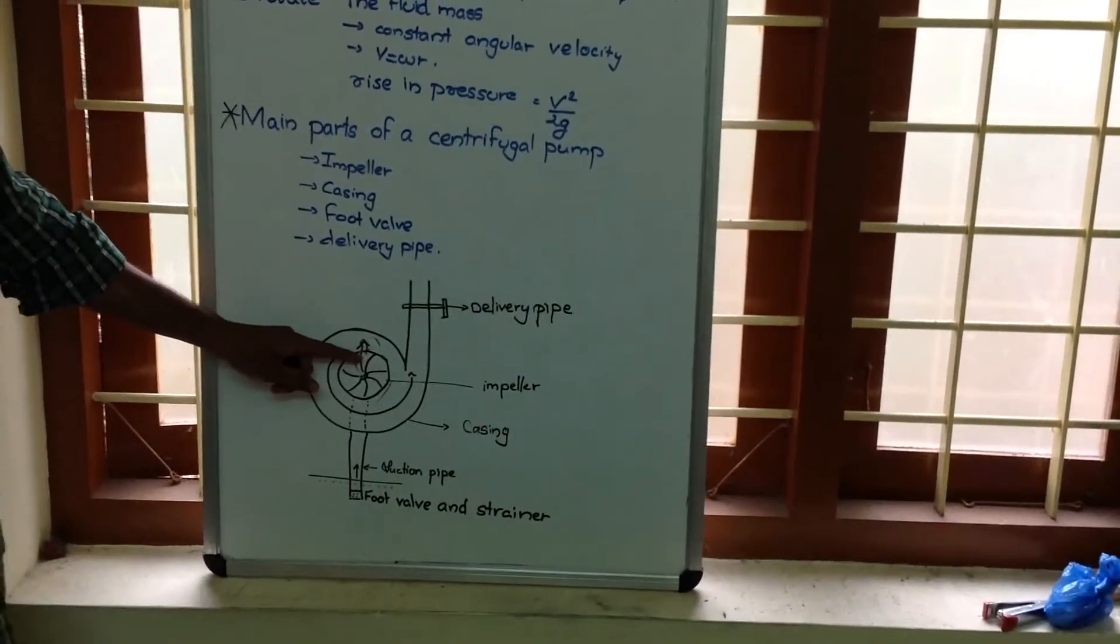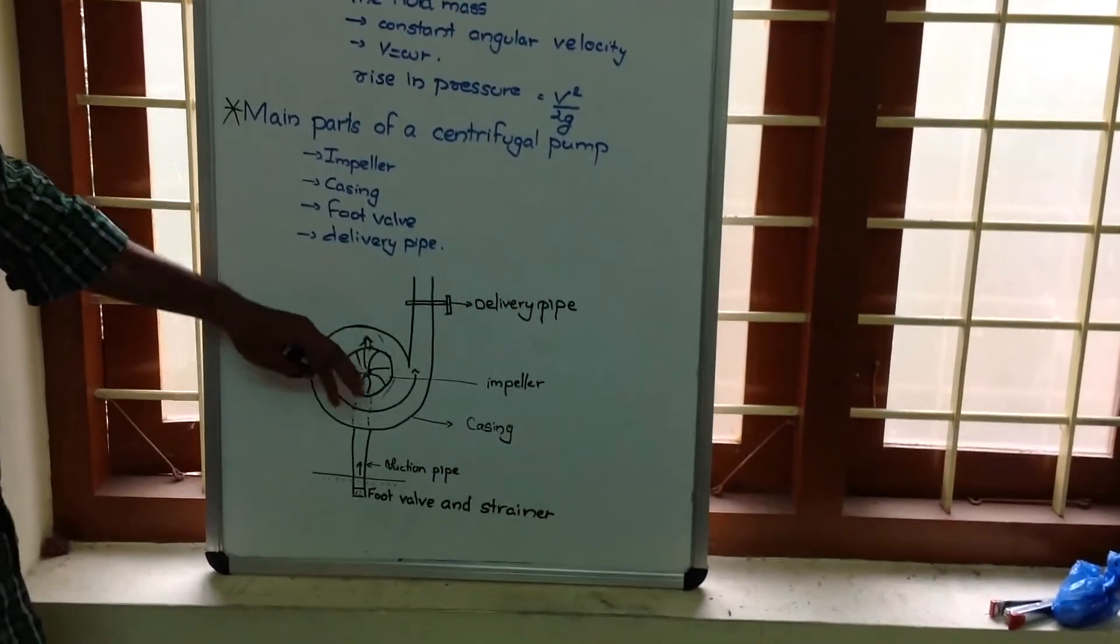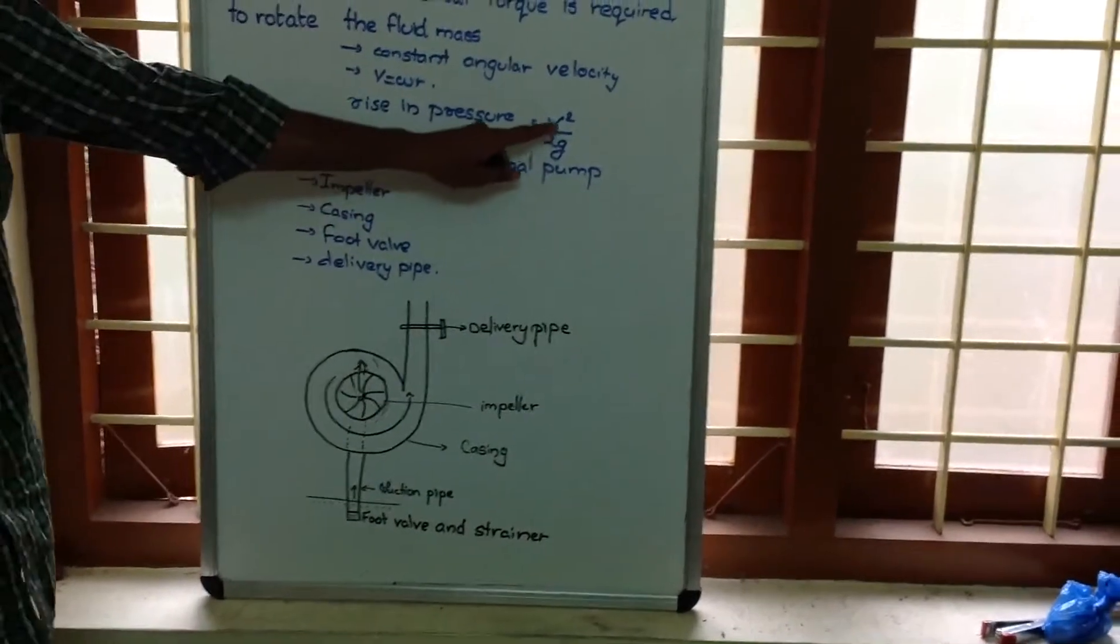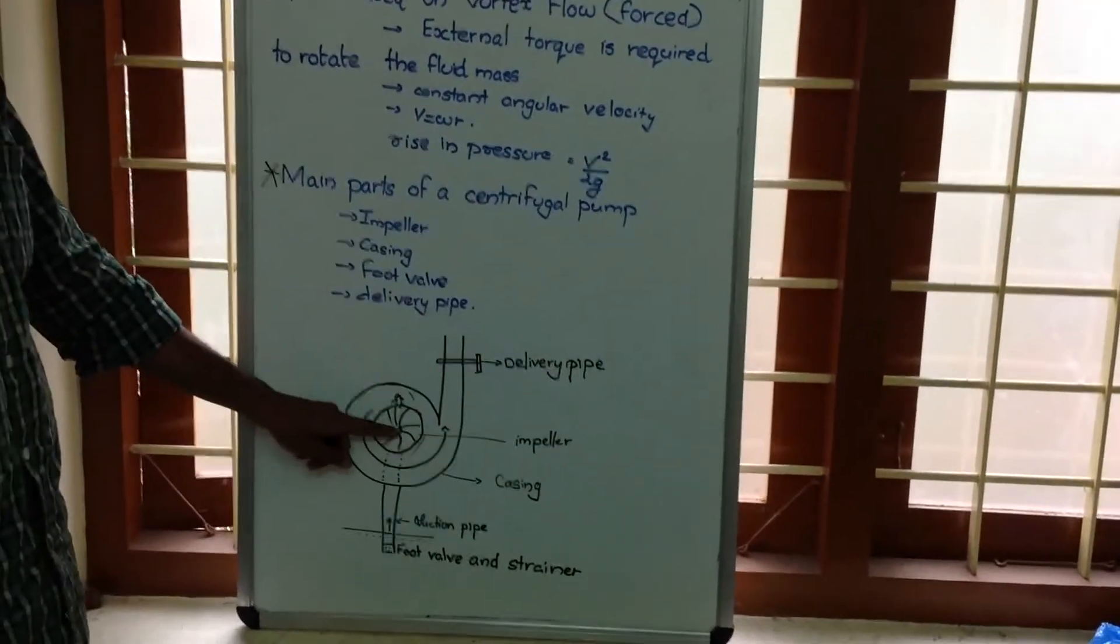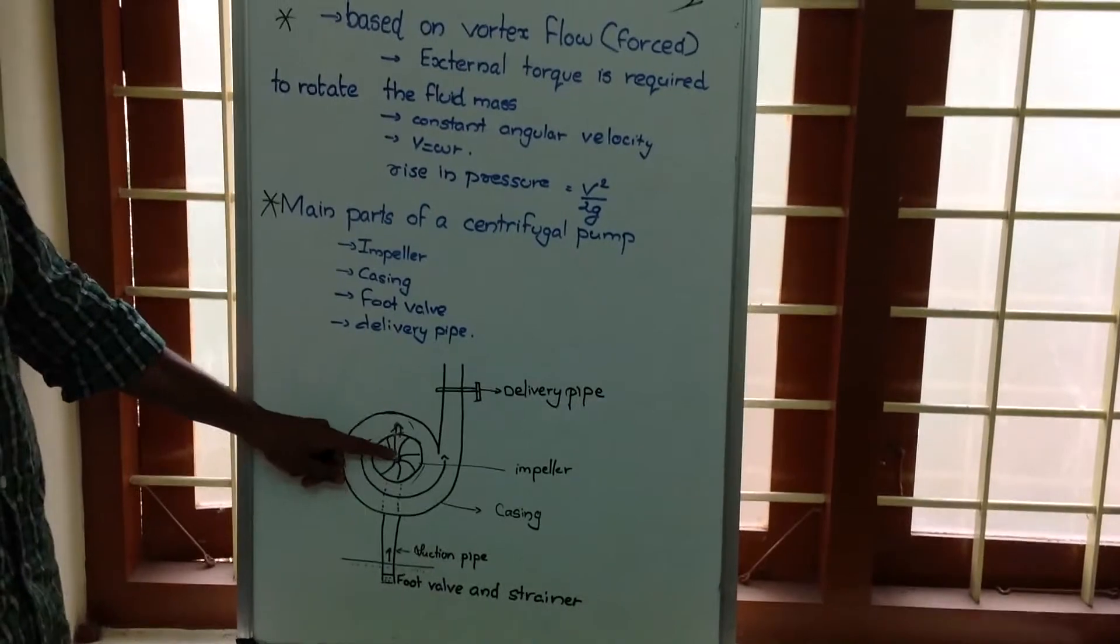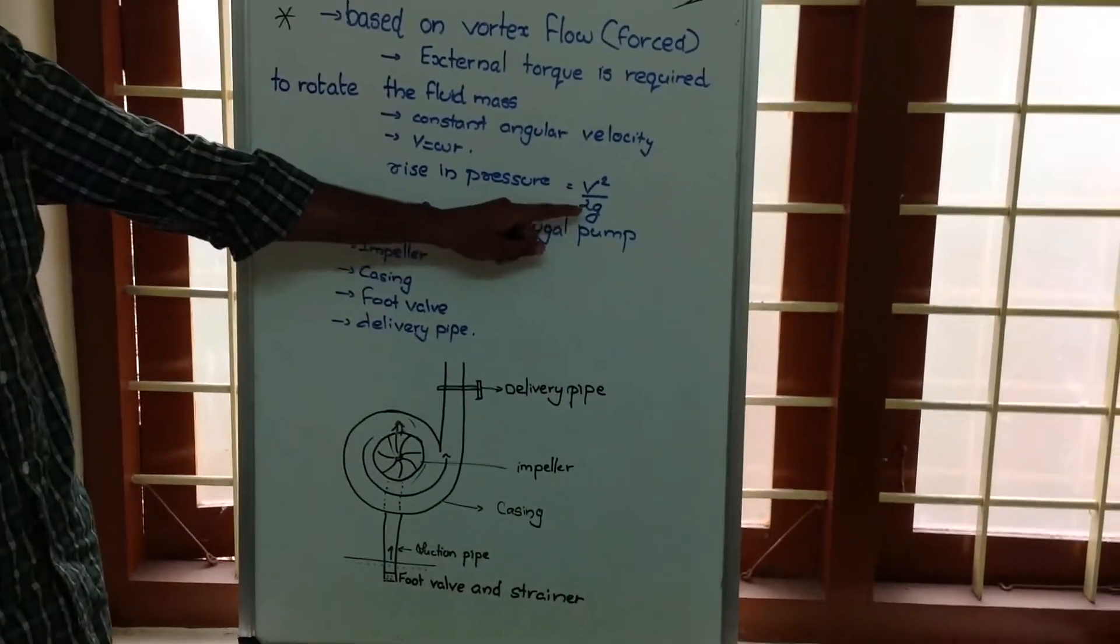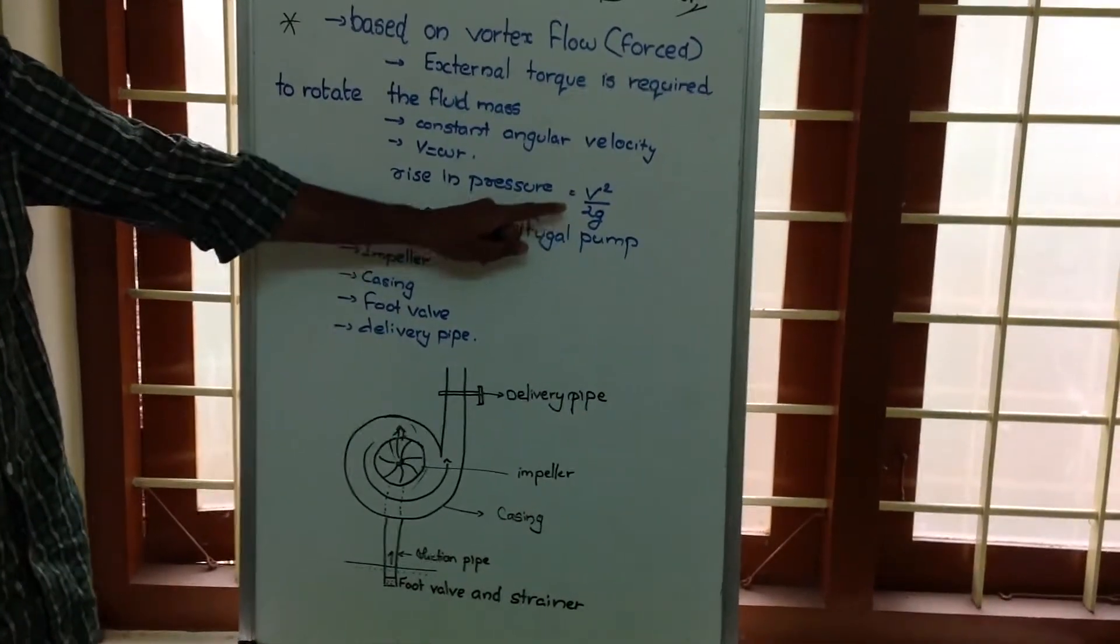So here, there will be a rise in pressure v square by 2g. When water moves from this side to another side, there will be a rise in pressure given by v square by 2g.